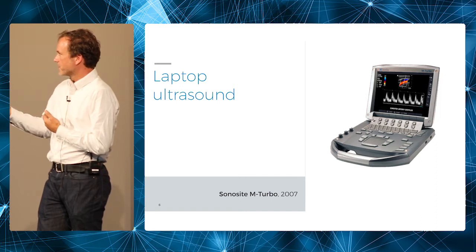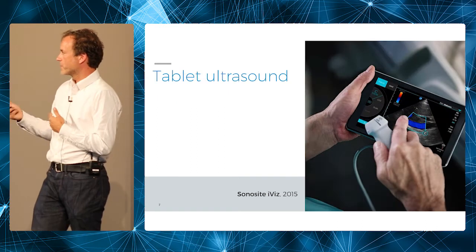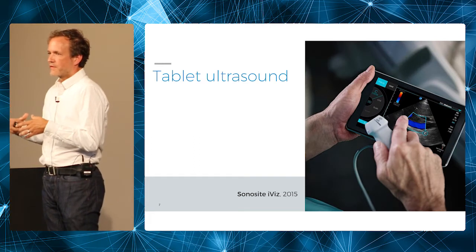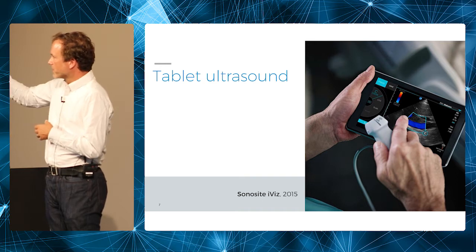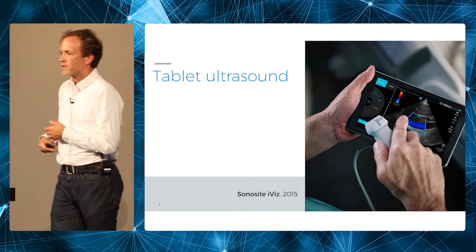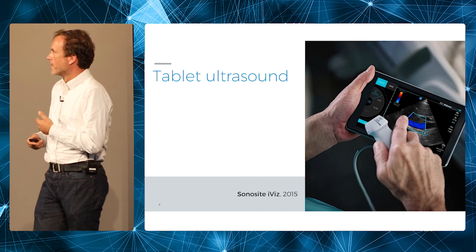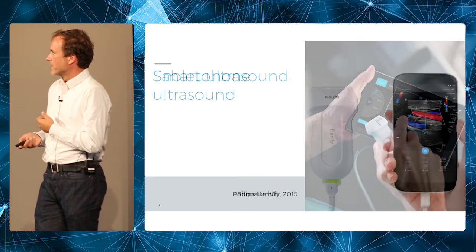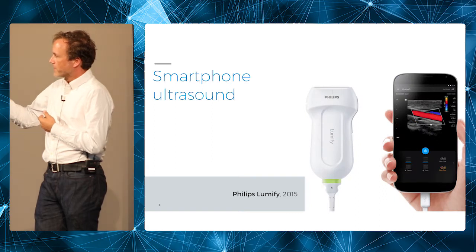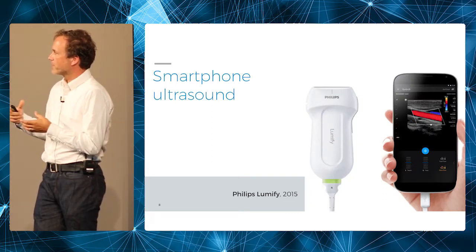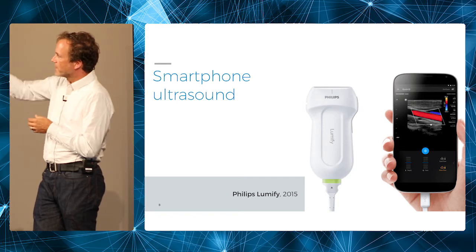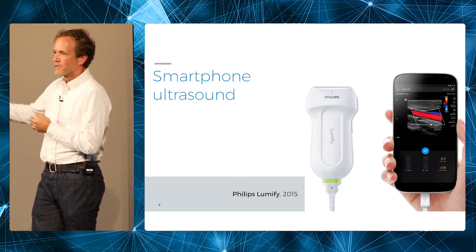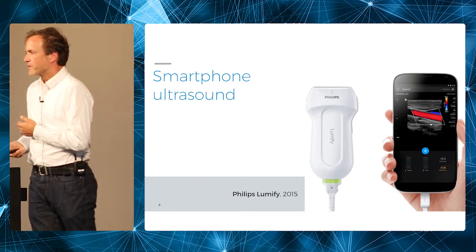The technology further improved, and about a year ago we got this ultrasound device that's only the size of a tablet. Together with this little probe, you can put all of this in the pocket of a coat, and it's a very high-quality ultrasound image. A couple of months ago, Philips released a device where the whole ultrasound device is essentially integrated into this probe, and it just connects with a standard USB connector to a standard smartphone.